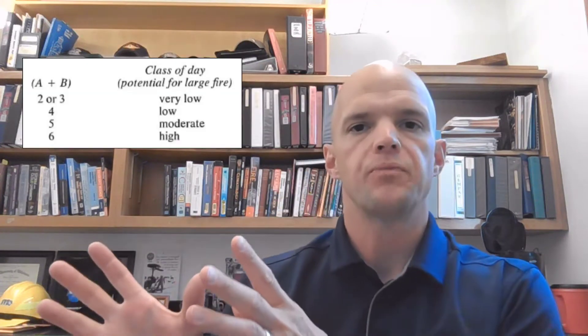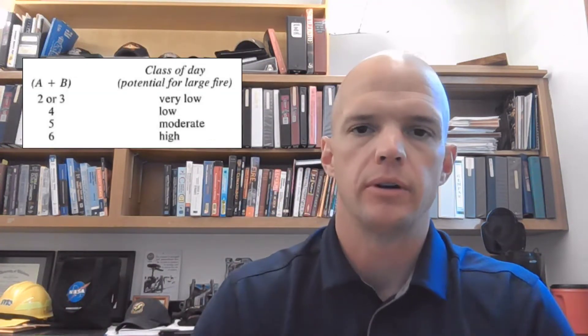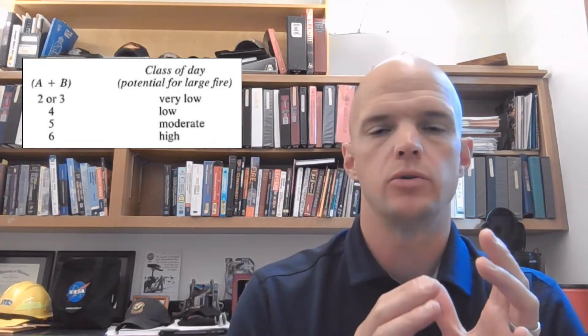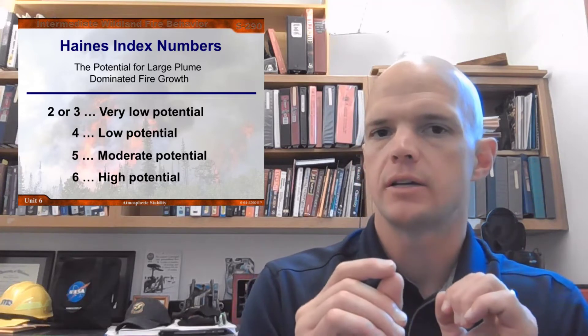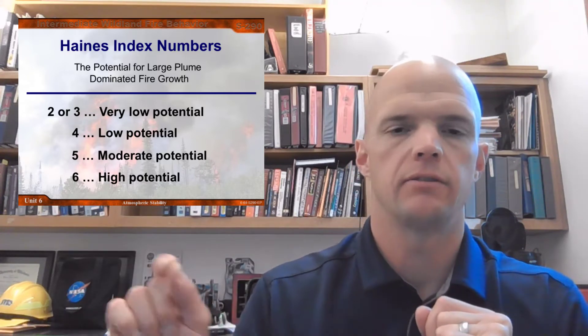Other problems with the Haynes Index is we're training on it incorrectly. On your screen now is the actual table from Don Haynes' 1988 paper that compares his index value to large fire growth. And now on your screen is a slide out of the current version of S290 that talks about the Haynes Index with respect to large plume-dominated fire growth. It's subtle but it's important: Don Haynes never discusses plume-dominated fire growth in his paper whatsoever. You don't see the words plume or plume-dominated in the paper at all. So we might be able to assess large fire growth from the Haynes Index, but it tells us really nothing about the ability for a fire to get plume-dominated.